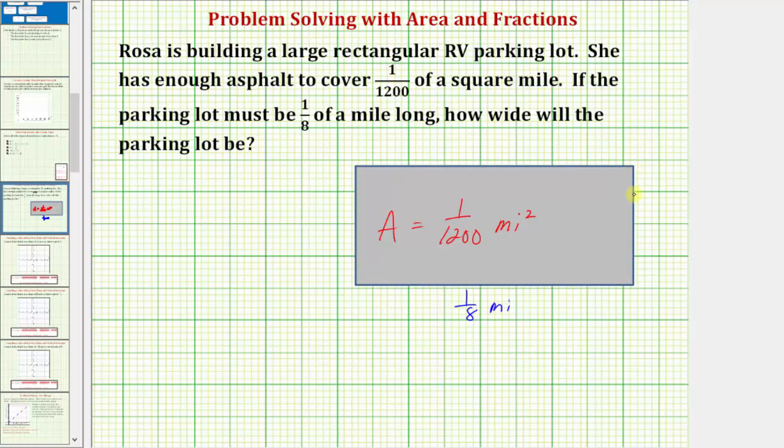Which means what is the length of this side here? Let's go ahead and label it W miles. Well we know the area of a rectangle is equal to length times width. So we can use this area formula to create an equation that we can then solve for W.